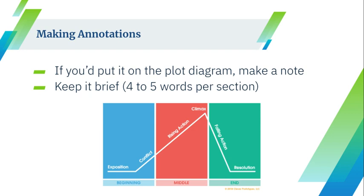My other advice about making annotations on this piece is keep it brief. We don't need you to rewrite the whole story. Write four to five words in a section to give yourself a little heads up about what's happening during that piece. We'll talk more about annotations as we go through our lessons. But this is the end of your first lesson for Damon and Pythias. Go ahead and get started — you're going to read the story, annotate it, make sure you pay attention to those stage directions for the play, and then answer the first 10 multiple choice questions of the quiz. When you're done, come back to YouTube and you'll find your lesson two video. Have a good day, guys, and good luck.